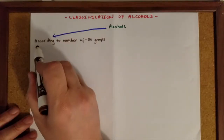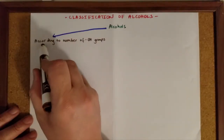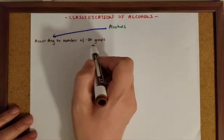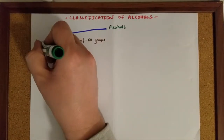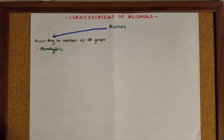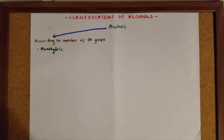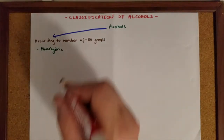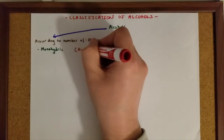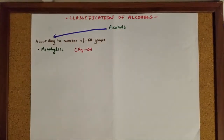Alcohols can be classified according to the number of OH groups. The first group is called monohydric alcohols. Monohydric alcohols are the alcohols which contain only one OH group, like CH3OH, methanol.